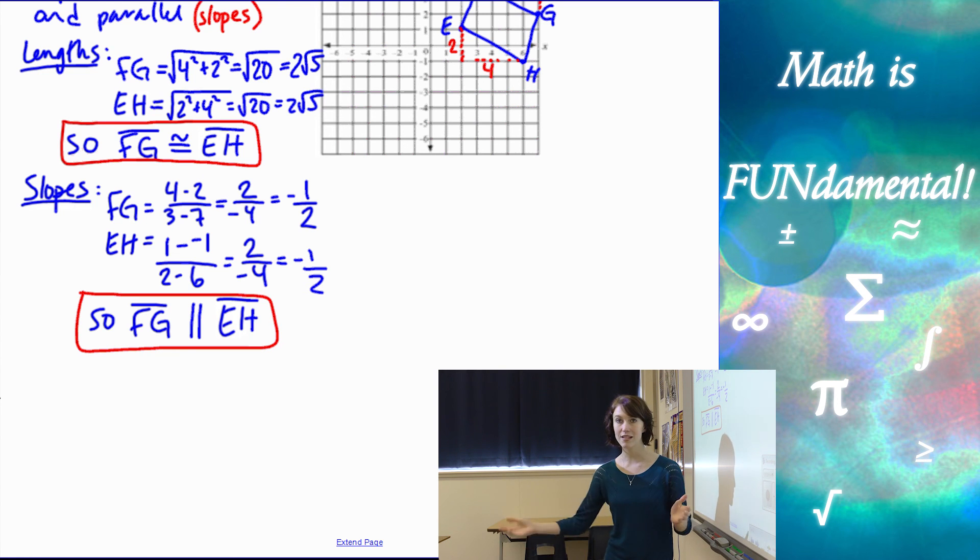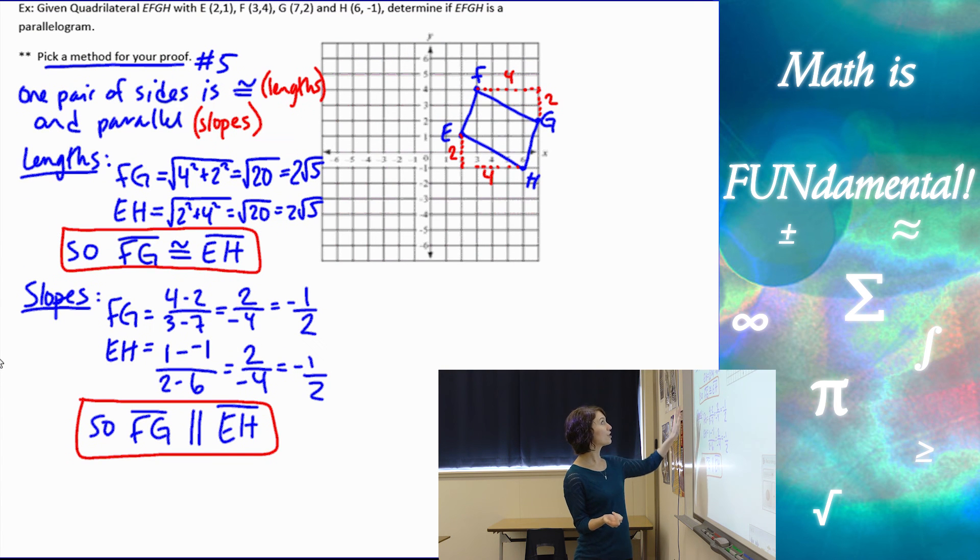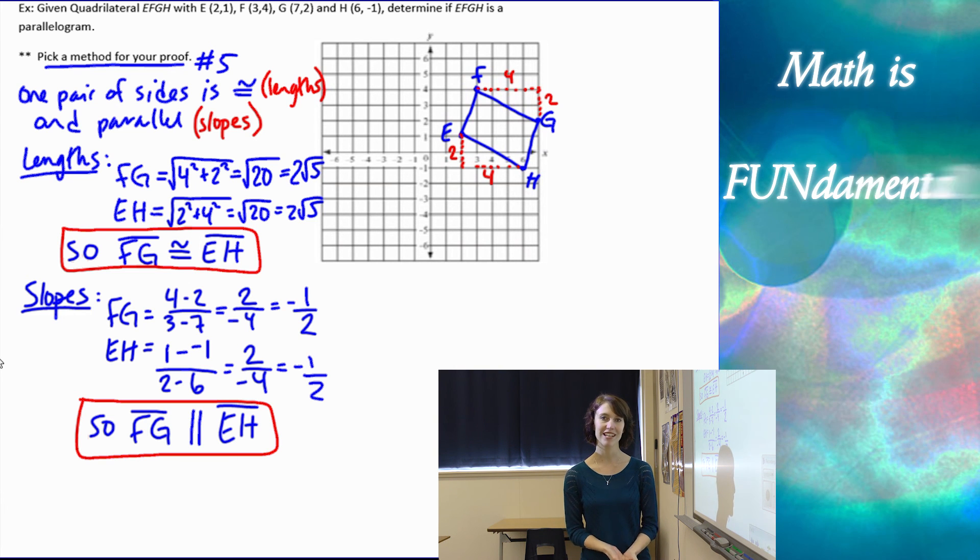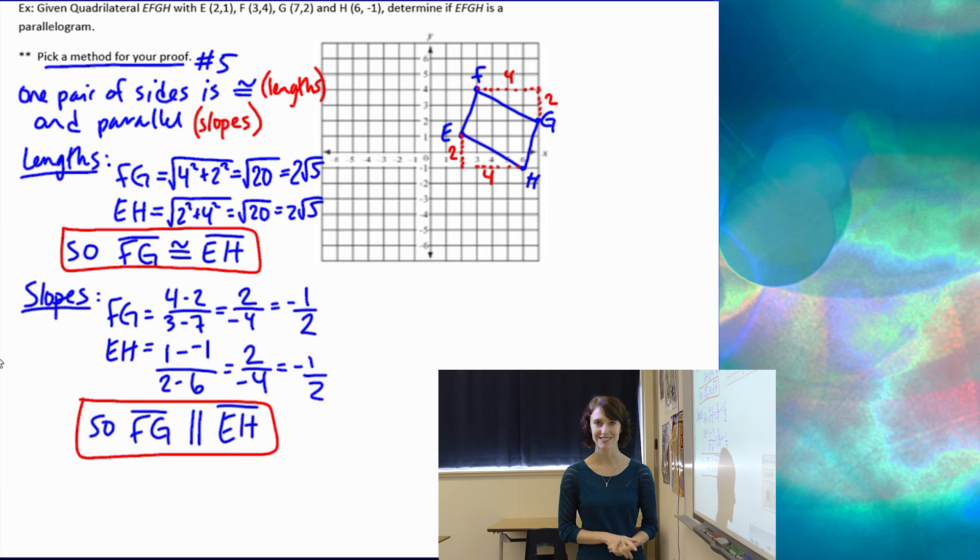We're done! Since we used that fifth method and showed that one pair of opposite sides were both congruent and parallel to each other, it has to be a parallelogram. That concludes our lesson for today. Thank you so much for watching, and remember, math is fundamental!